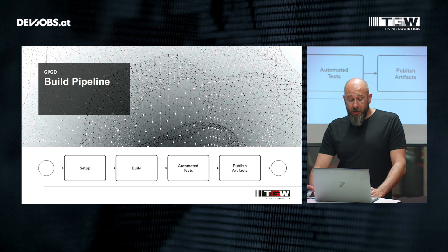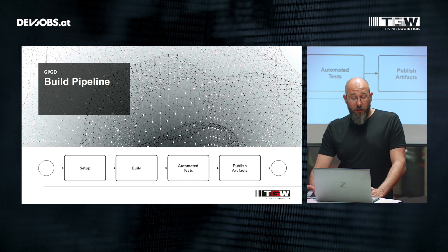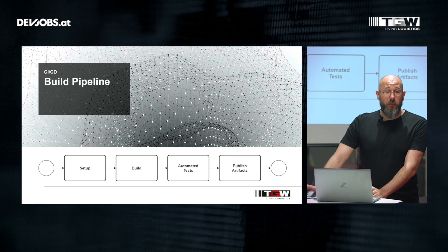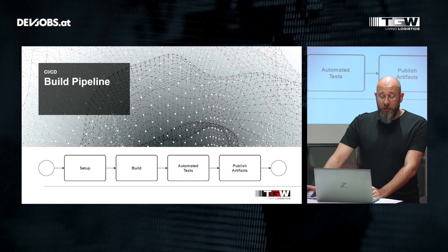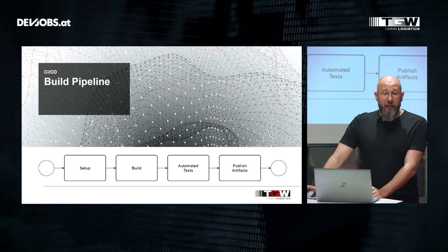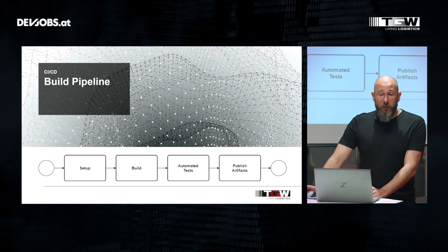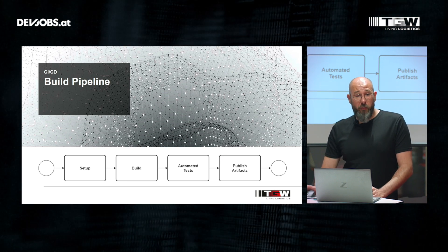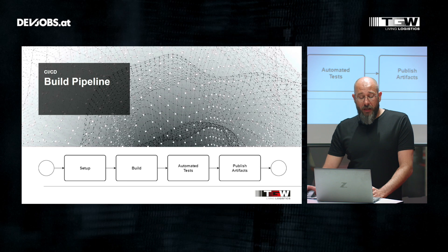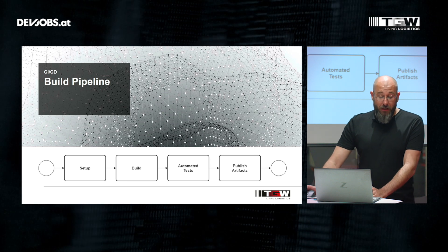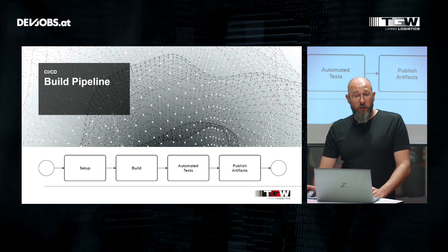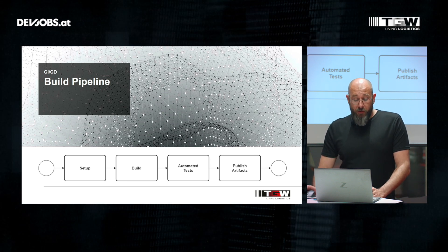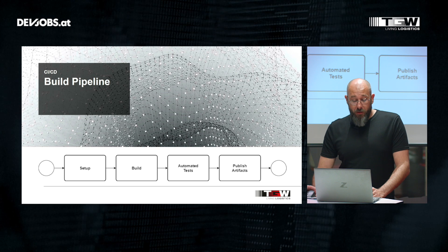So let's take a look at the typical build pipeline. You can split it up into four phases. You have the setup where you check out your repository, initialize your variables, and install some tools that you need during your pipeline run.